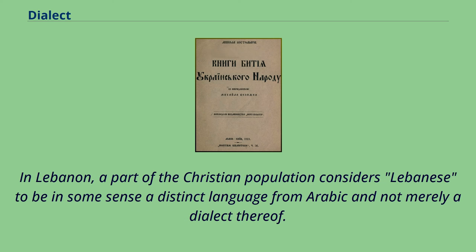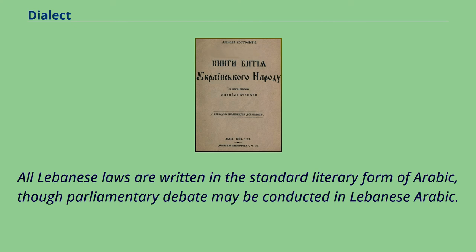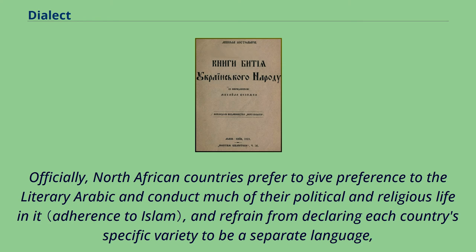In Lebanon, part of the Christian population considers Lebanese to be a distinct language from Arabic and not merely a dialect thereof. During the Civil War, Christians often used Lebanese Arabic officially and sporadically used the Latin script to write Lebanese, further distinguishing it from Arabic. All Lebanese laws are written in the standard literary form of Arabic, though parliamentary debate may be conducted in Lebanese Arabic. In Tunisia, Algeria, and Morocco, the Darijas are sometimes considered more different from other Arabic dialects.